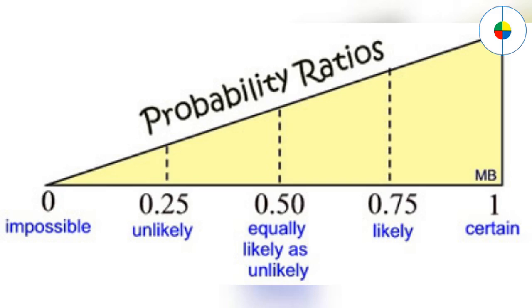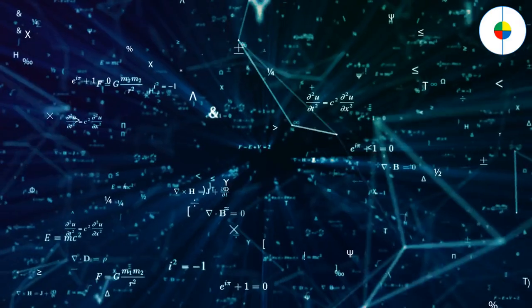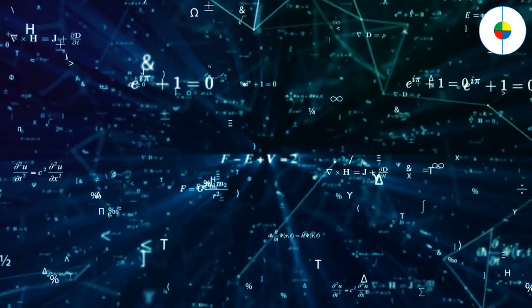Probability is the likelihood that something will happen. It's a number between 0 and 1, and can be written as a percent. Before we start, you should be familiar with algebra. Now, let's start.